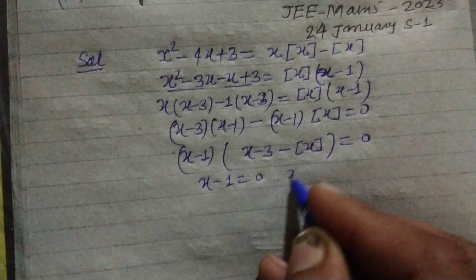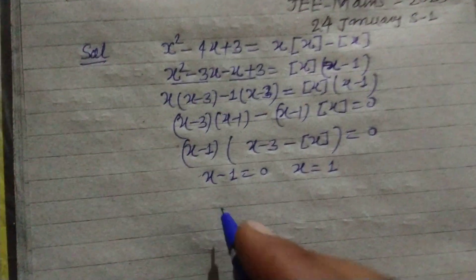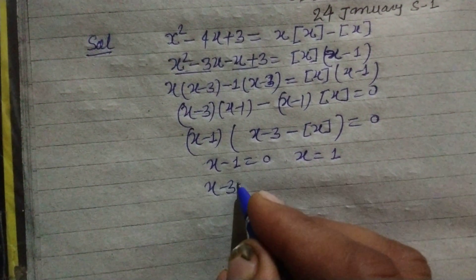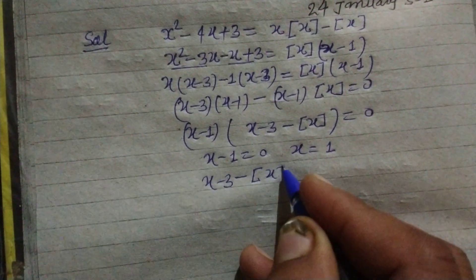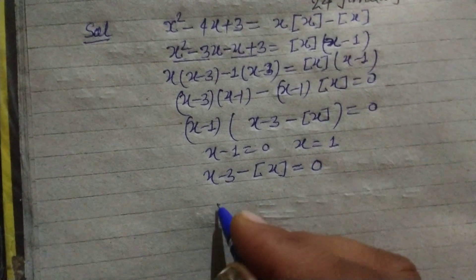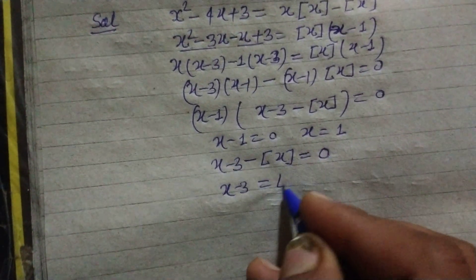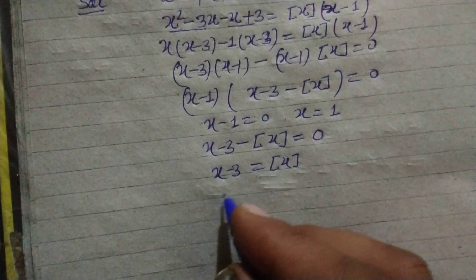When we put x - 1 = 0, we get x = 1. And x - 3 - [x] = 0 means x - 3 = [x], here x - 1.